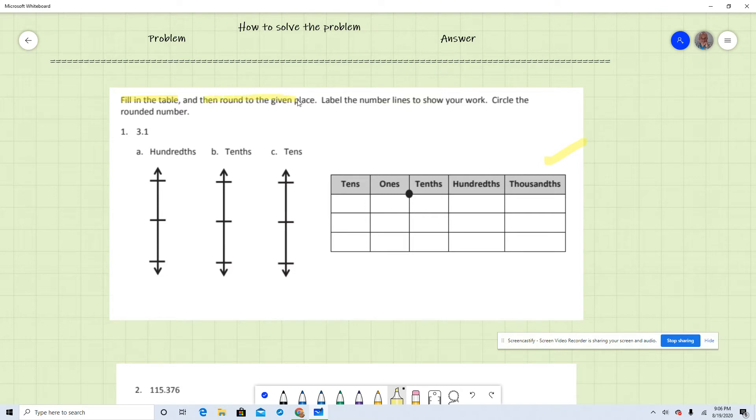And then round to the given place. We're going to round in the table. Then it says to label the number lines to show the work. So that's going to be step one. And from here, we're going to go to step two, which is going to be label the tables, circle around the numbers. So that's exactly what we're going to do now.